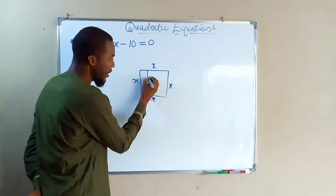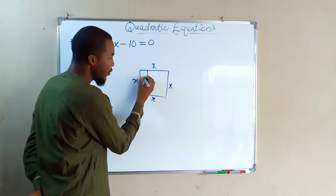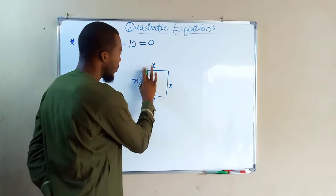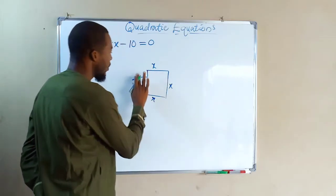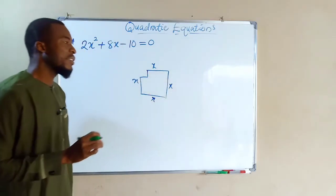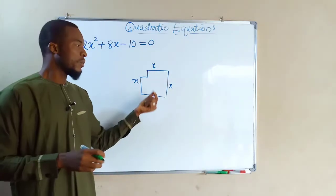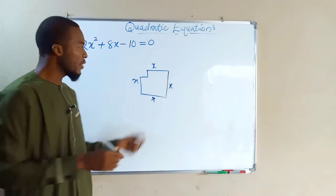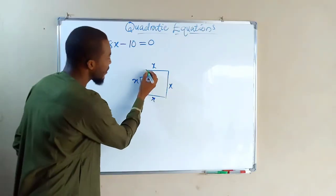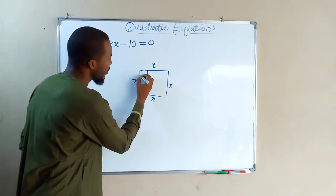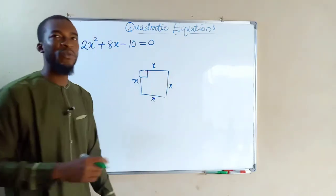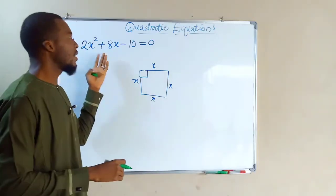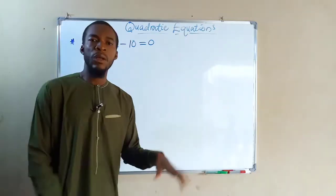But having a plane figure in this form, the square is not complete. To make this plane figure a complete square, you have to fill this side. And that is what we are going to be looking at in this quadratic equation.